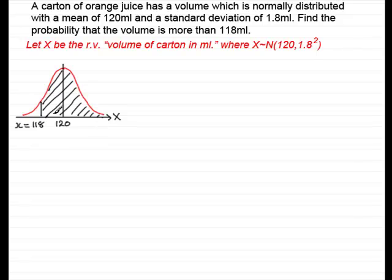Now in order to find this area, this probability, we need to standardize the distribution. So what I'd do is draw another normal distribution below, label it z, z being the standardized variable.